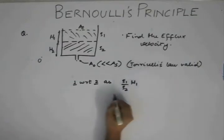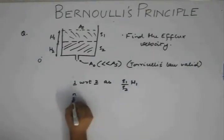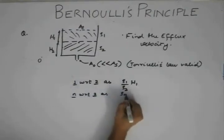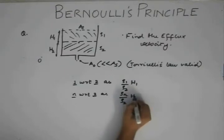If we have n liquids, we have n with respect to 2 as rho2 into hn.